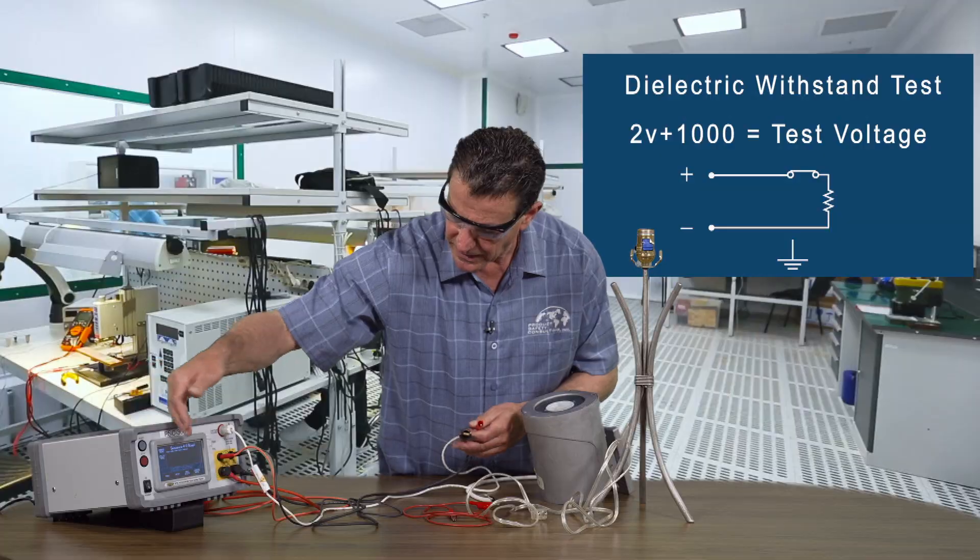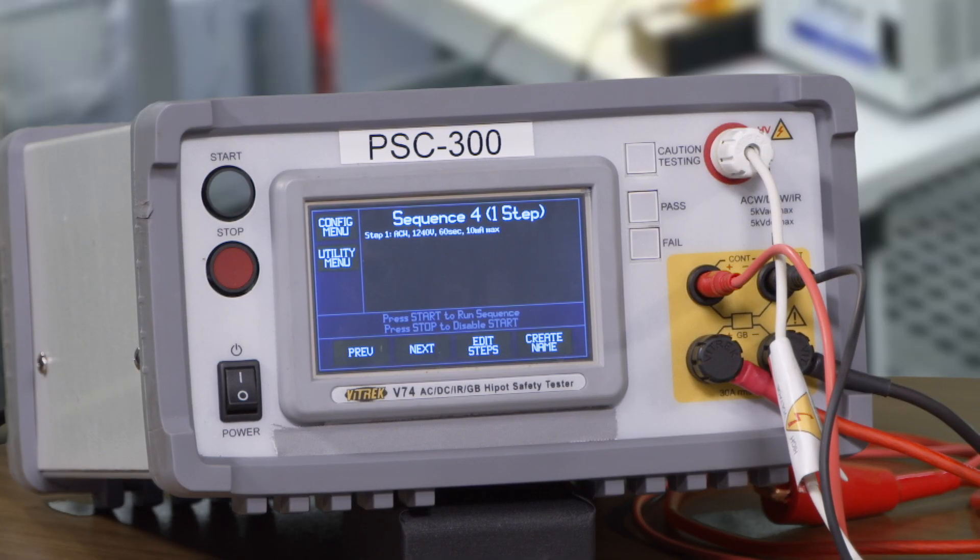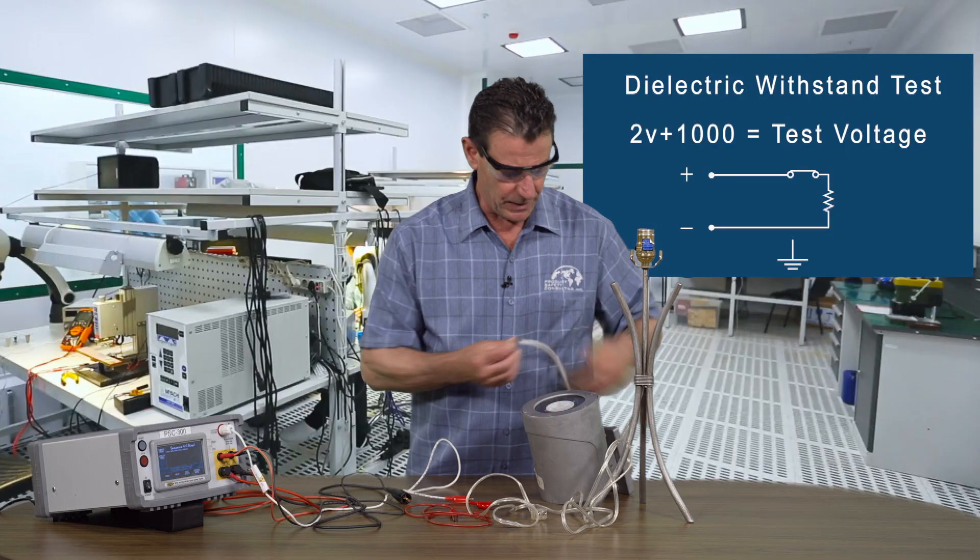We at Product Safety use the Vitrek V74. There's a variety of models out there. This is a workhorse for us. We love it.